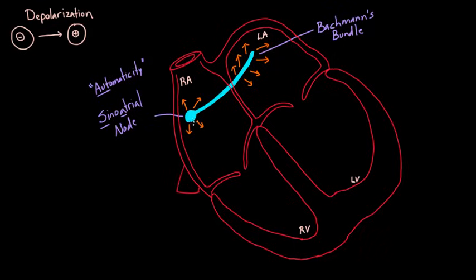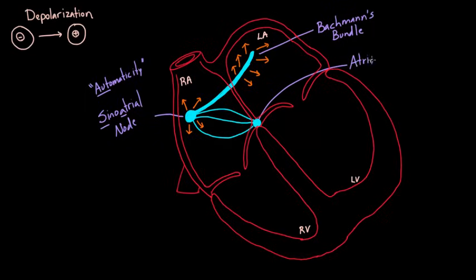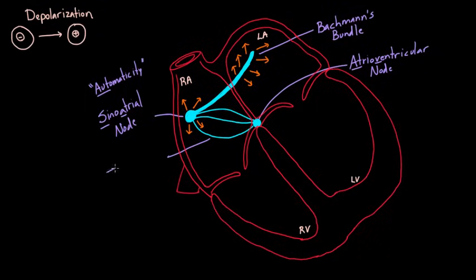Just like Bachmann's bundle, there are actually a few more little bands of tissue — almost like little highways — that take the signal down to another node called the atrioventricular node. The atrioventricular node is really the only connection in most of us between the atria and the ventricles — sometimes called the AV node. The signal came through what is called intranodal tracks, meaning between two nodes. That's the name for all three of them. So the signal went from the SA node through the intranodal tracks down to the AV node.